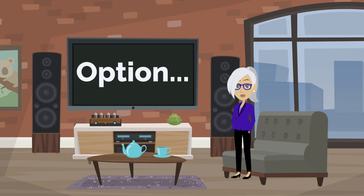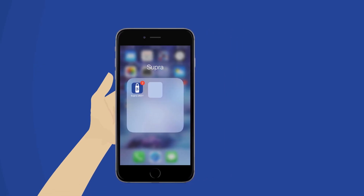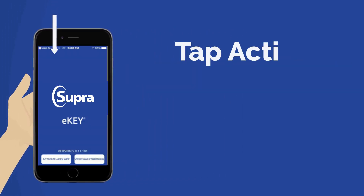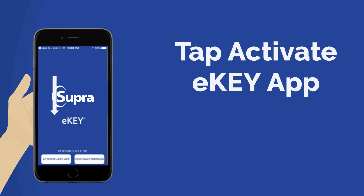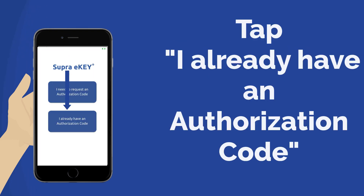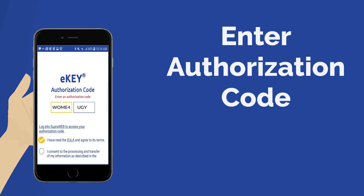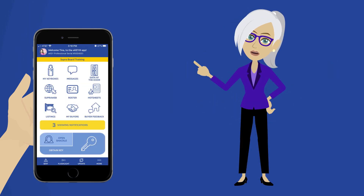As an option, you can enter the authorization code manually. Open the eKey app. Tap on Activate eKey. Tap 'I already have an authorization code.' Enter the authorization code. Now you are ready to use your eKey.